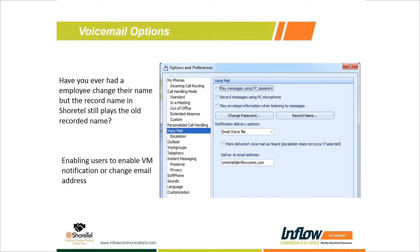I use the email wave file option because I'm out of the office a lot and I want to be able to see on my smartphone that I have a voicemail I need to listen to. You can change the delivery to a wave file, or just set a notification — where an email says 'hey, there's a voicemail from so-and-so at this time' and then you call into the system or go to your phone to listen. With the wave file, you can download and listen to the message directly from your phone.